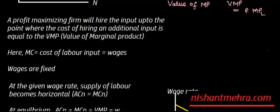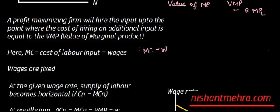Assuming labor is the only variable factor, what is the marginal cost for the entrepreneur or producer? That is the cost of hiring an additional unit of labor. Since labor is the only variable factor, the cost of hiring an additional unit is the marginal cost, and that is equal to the wages. Wages are fixed — every additional unit of labor is paid, say, rupees 10, so marginal cost equals wages.